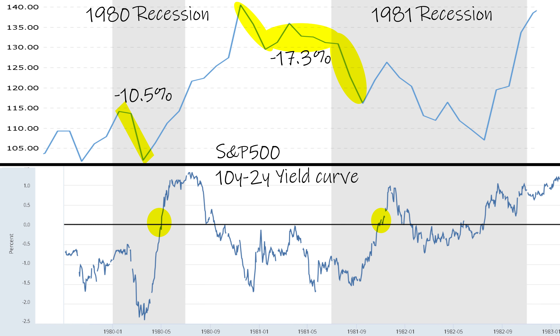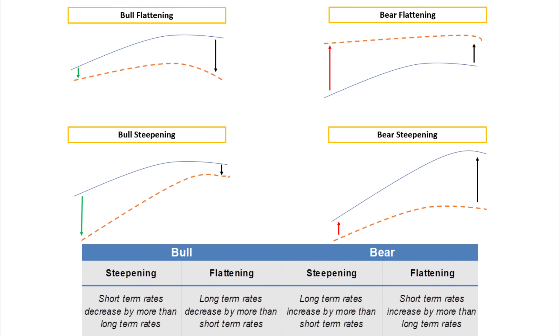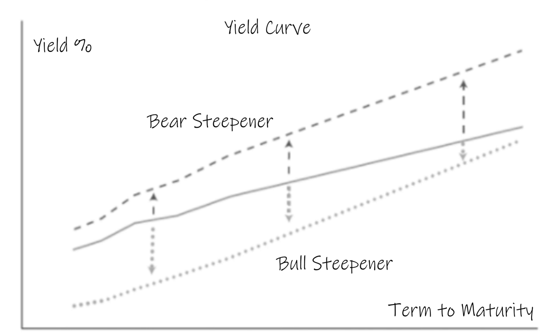Before we move on to discuss what is happening today, we need to first explore how this particular move in bond yields has occurred. It's not as simple as saying the spread on these bonds is reverting back to normal, because there are actually four different scenarios in terms of how this occurs that say different things about the economy. Today we'll be focusing on only two of those, called bull and bear steepeners. Before we look at that, we need some context.